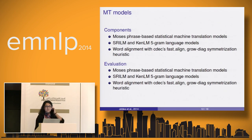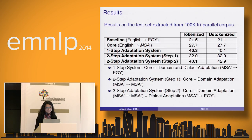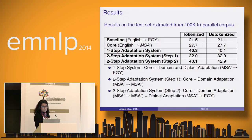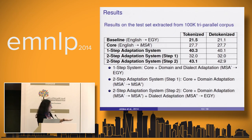For evaluation, we use the classic BLEU metric. The test set was extracted from the 100K tri-parallel corpus and is composed of one thousand sentences, compared across different system configurations.